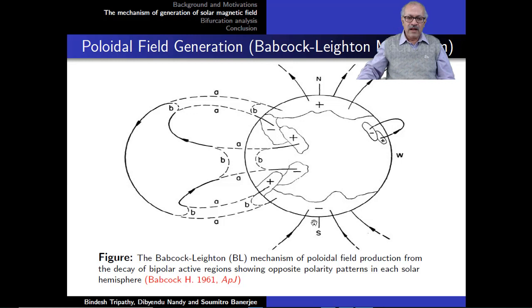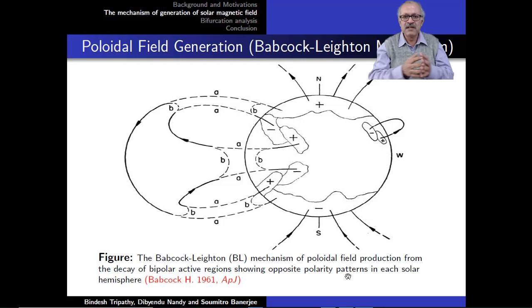To summarize: a poloidal magnetic field, due to differential rotation, creates a toroidal magnetic field. The toroidal field pierces the surface at some locations, appearing as sunspot pairs with a tilt. That tilt creates a magnetic field opposing the original poloidal field. Each emergent sunspot weakens the existing poloidal field and ultimately reverses it, approximately on an 11-year cycle. This is called the Babcock-Leighton mechanism of interaction between the poloidal and toroidal fields — the major dynamo mechanism in the sun.